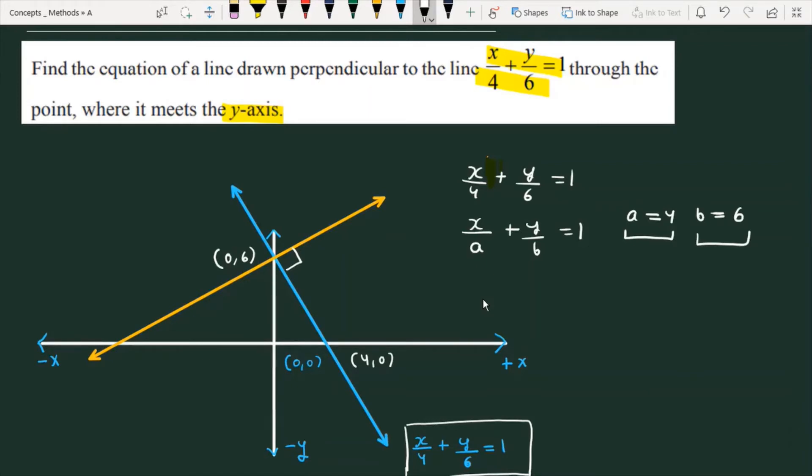The question says that this line meets the y-axis at the point (0,6). The line x/4 + y/6 = 1 meets the y-axis at (0,6). Now, the question asks to find the equation of a line that is perpendicular to the given line and passes through (0,6).